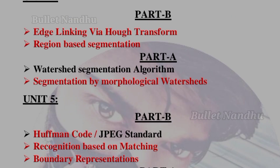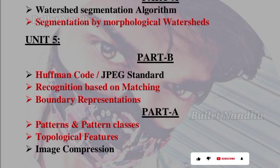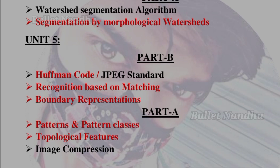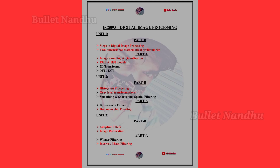Unit 5 Part B covers information-based matching and boundary representations, which is a good one. Unit 5 Part A covers patterns and pattern classes, topological features, and image compression, which is also a good topic.